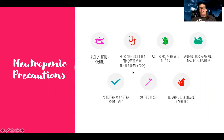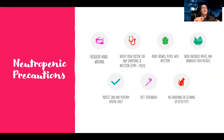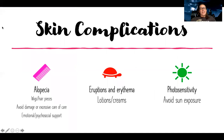Neutropenic precautions include frequent hand washing. They should notify their doctor if there are any symptoms of infection, such as a temperature greater than 100.4°F. They should avoid crowds or people with infection, avoid uncooked meats and unwashed fruits and vegetables. On a neutropenic precautions food tray, no fresh fruits or vegetables will be given due to high risk of bacterial infection. They should protect their skin and perform hygiene daily, use a soft toothbrush, and avoid gardening or cleaning up after pets. Fresh flowers are also not allowed in their room.